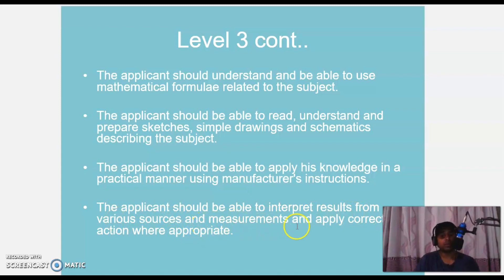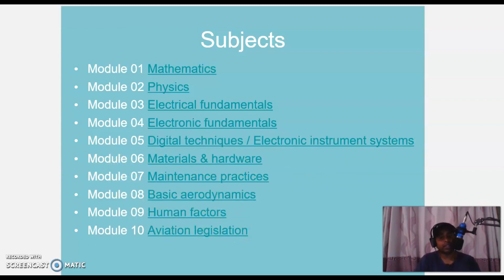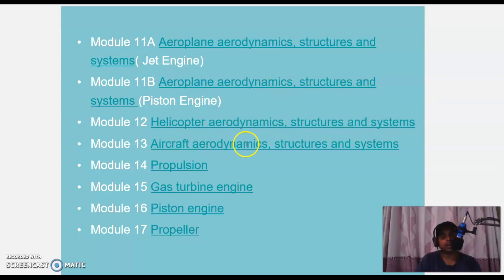Summary of all module subjects: Module 1 Mathematics, Module 2 Physics, Module 3 Electrical Fundamentals, Module 4 Electronic Fundamentals, Module 5 Digital Techniques Electronic Instrument System, Module 6 Materials and Hardware, Module 7 Maintenance Practices, Module 8 Basic Aerodynamics, Module 9 Human Factors, Module 10 Aviation Legislation, Module 11A Aeroplane Aerodynamic Structures and Systems (jet engine), Module 11B for piston engines, Module 12 Helicopter Aerodynamic Structures and Systems, Module 13 Aircraft Aerodynamics Structures and Systems, Module 14 Propulsion, Module 15 Gas Turbine Engines, Module 16 Piston Engines, Module 17 Propeller.